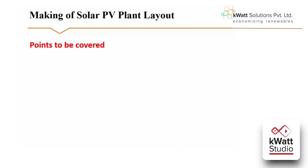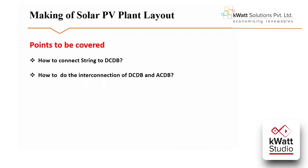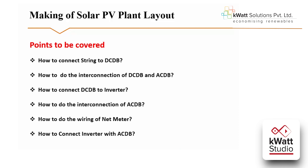Module 4 is the making of solar PV plant layout. Here we will learn how to connect strings to DC DB and do the interconnection of DC DB and AC DB. We will see how components of DC DB are connected to each other and how to connect DC DB with the inverter. We will also learn how to wire the net meter — which is a very important part of a solar PV system — and how a net meter is connected in AC DB, and how to connect the inverter with AC DB.